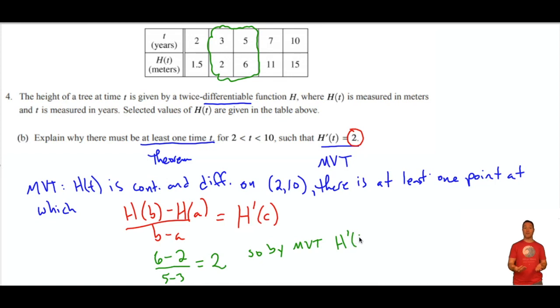the mean value theorem guarantees that there must be at least one point where h prime, the instantaneous rate of change, is equal to 2.